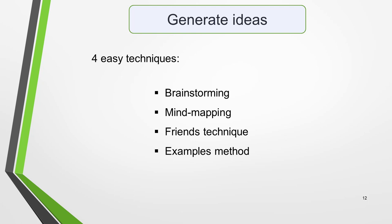Now that you fully understand the question, you must quickly think up some ideas to write about. For this, you need an idea generation strategy that works well for you and that you've practised beforehand. We all think in slightly different ways, so what works for one person might be completely the wrong method for somebody else. Different techniques can also work well for different question types, so it's worth having two methods you can use confidently. Then you'll be ready to answer whatever type of question you get. There are four main techniques for generating ideas for IELTS essays: brainstorming, mind mapping, the friends technique, and the examples method.